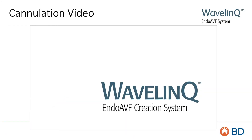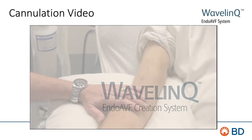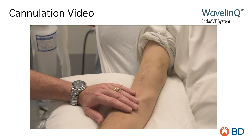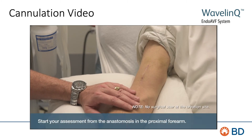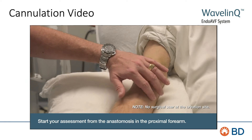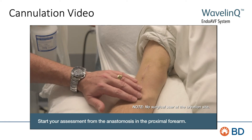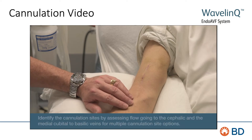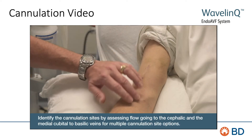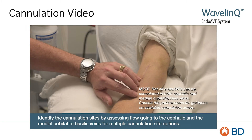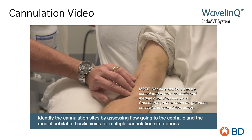This video shows an example of cannulating a Wavelink Endo-AVF. Today I'm going to cannulate an endovascular fistula. You can feel a thrill just over the anastomosis. With an endovascular fistula there's no surgical scar, and because of the configuration, flow actually goes up the cephalic vein and the basilic vein as well, so there are different areas that you can cannulate.